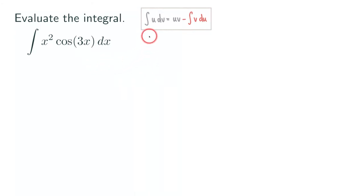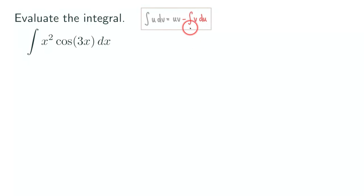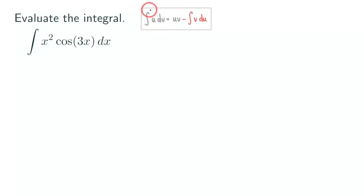Before we start the problem, we are going to review the formula. We have the integral of u dv is equal to u times v minus the integral of v du. This integral of v du, highlighted in red, is the key integral here. We just need to make sure that we can integrate this integral after we rewrite our original integral in this form.